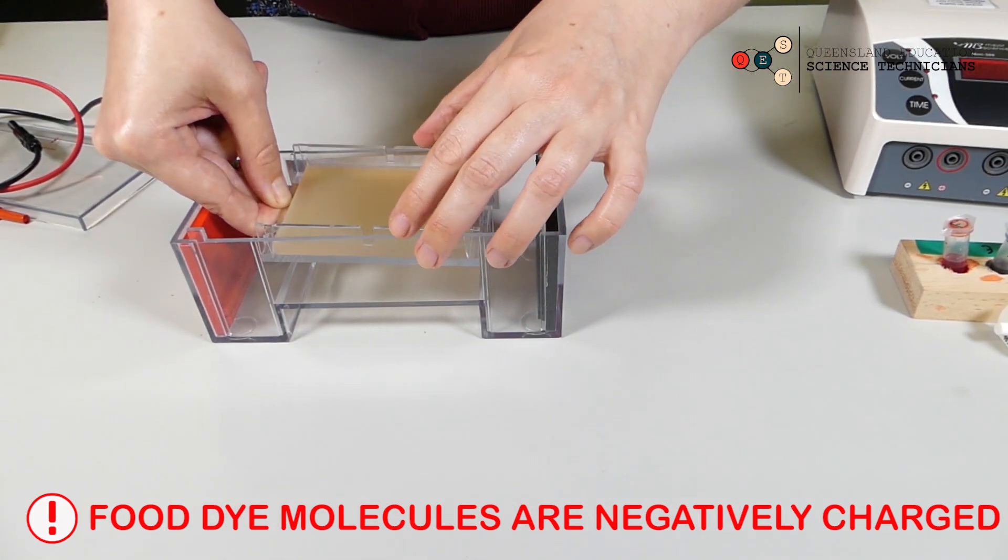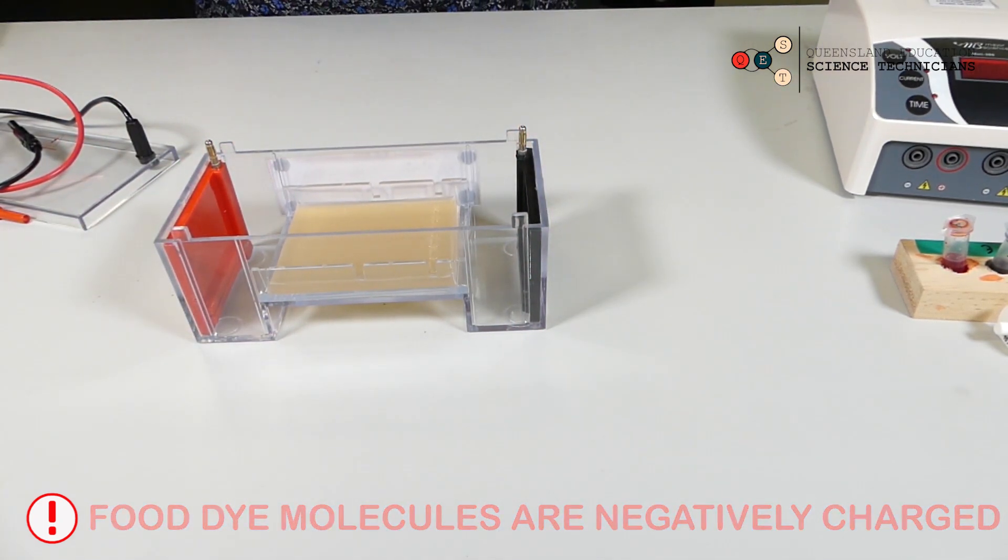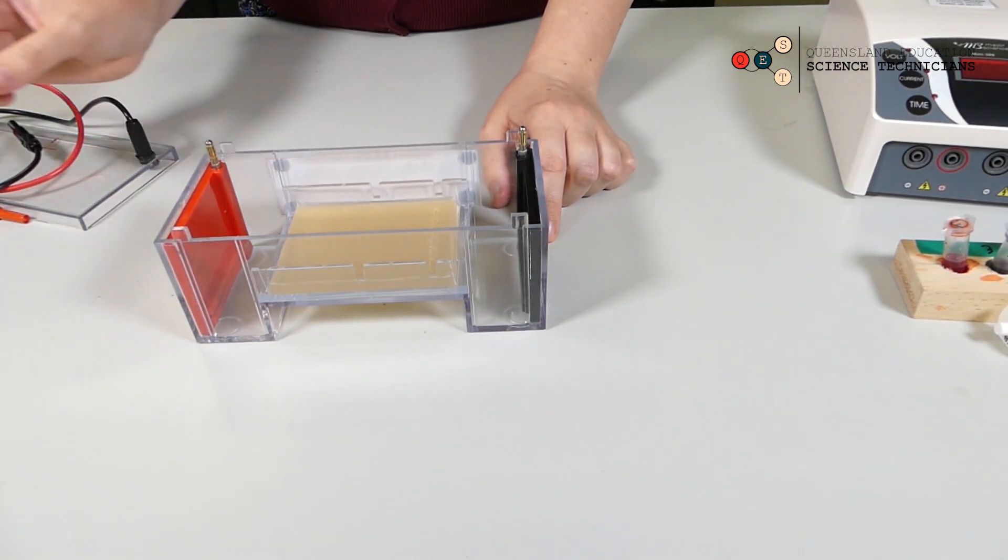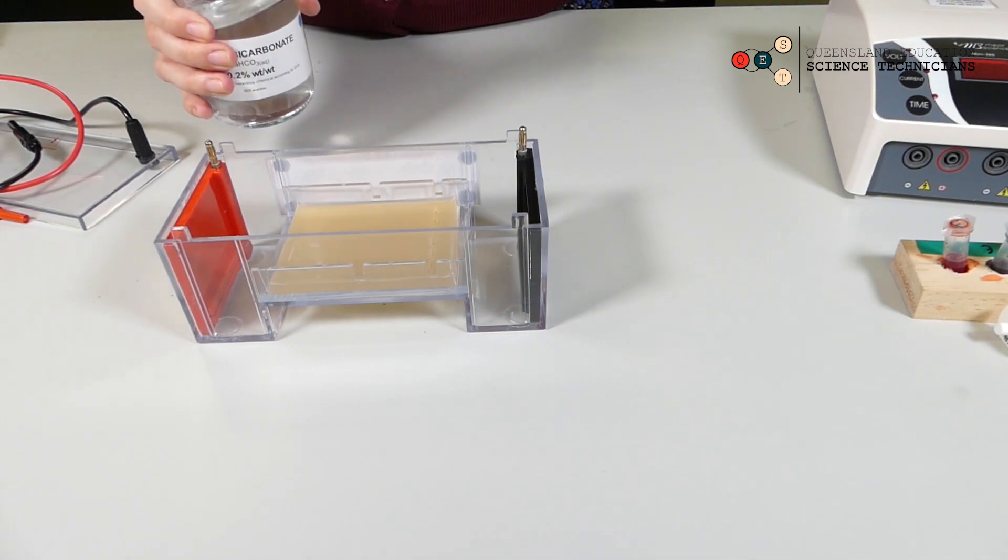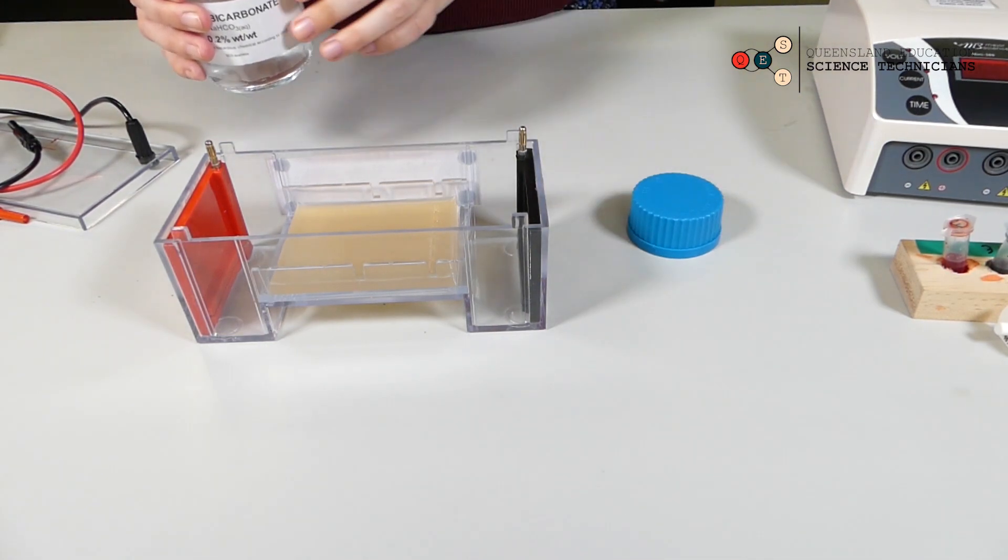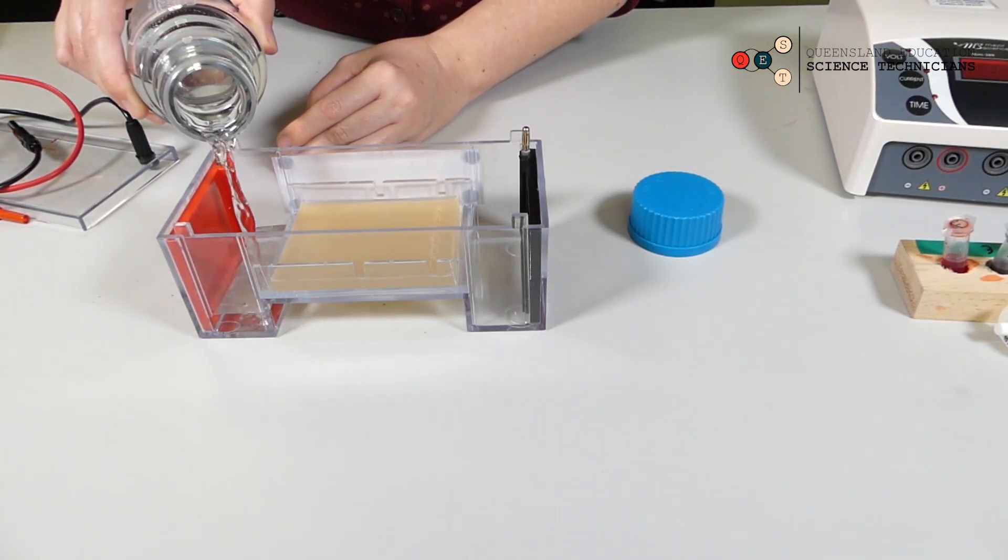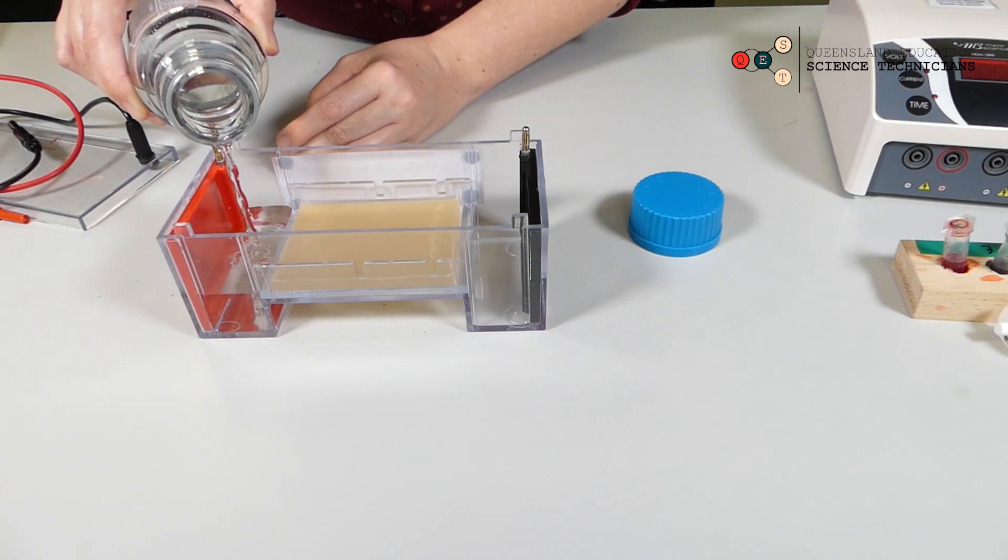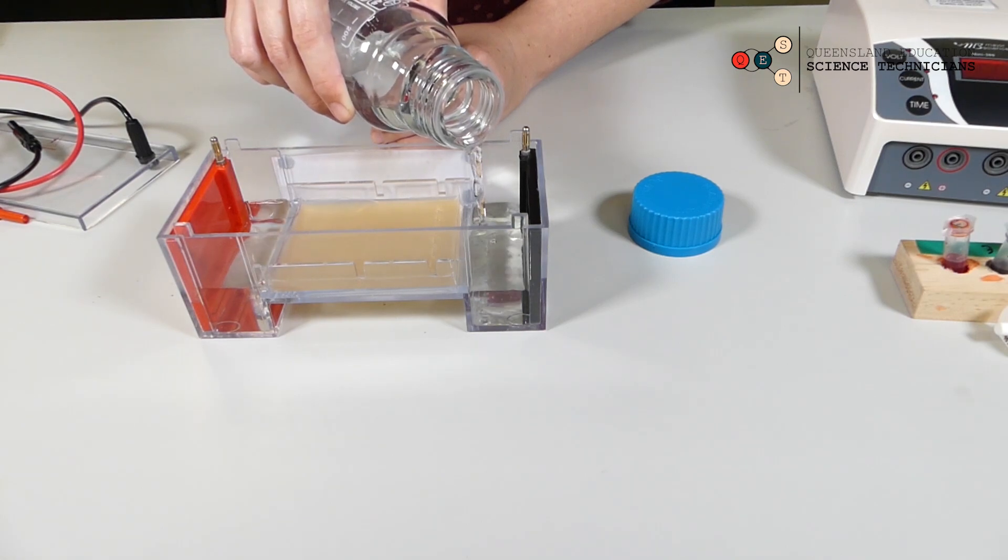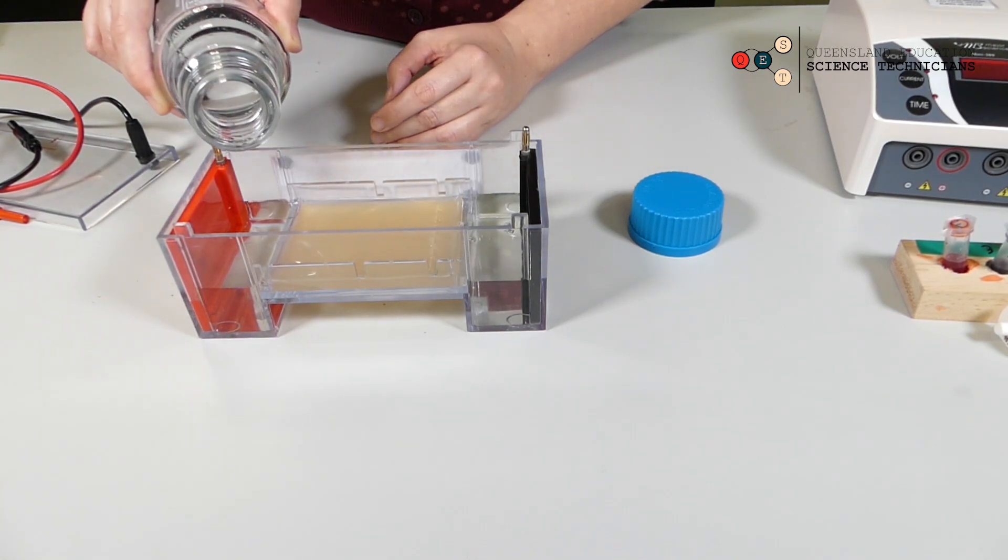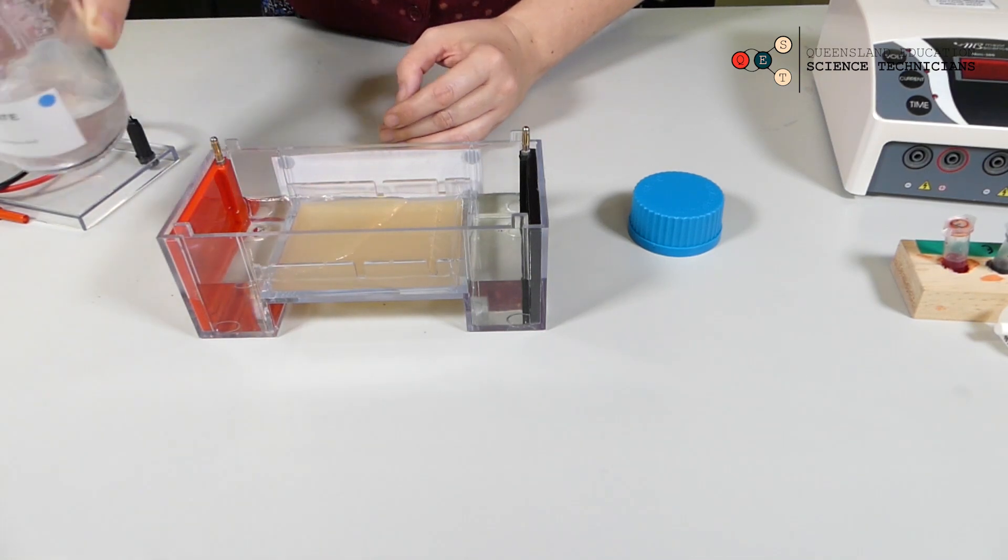So just pop it in there. Now we need to fill our chamber up with our buffer solution. It's the same buffer that we used to make our gel. I like to fill up one end, and then fill up the other end. And you just want it in a thin layer over the top, as thin as you can possibly make it.